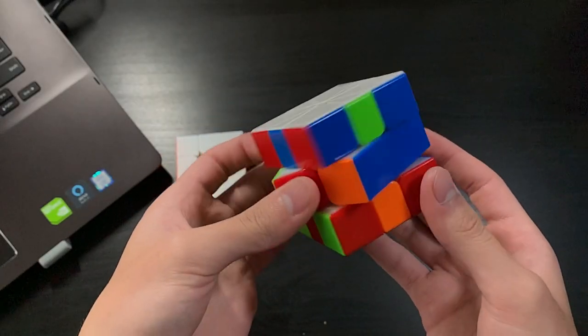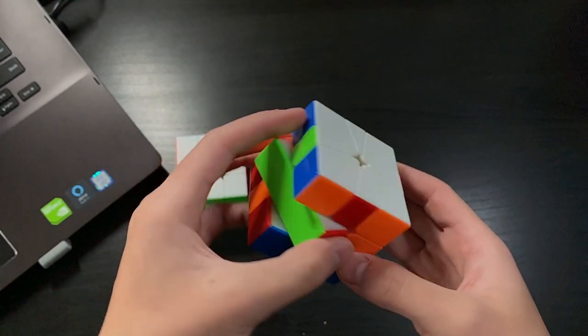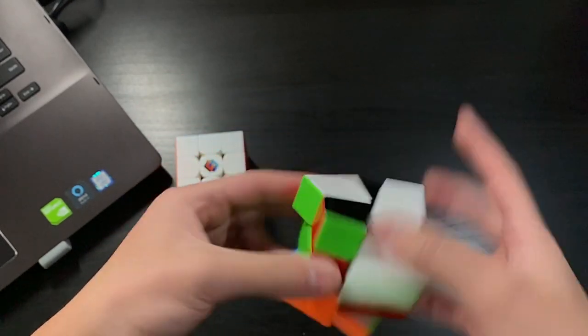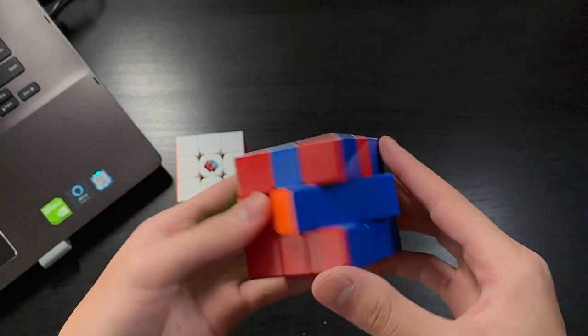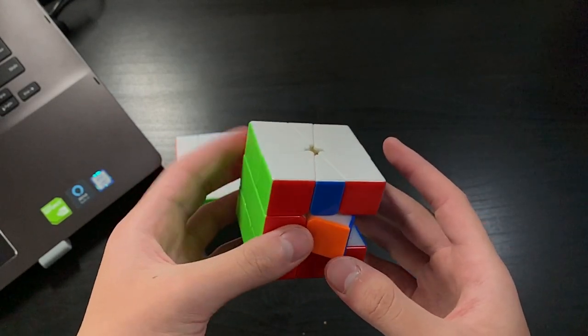But there are many more due to the addition of the bottom layer as well as certain parity cases. I won't be going too in depth on parity, but basically, there are cases that are impossible to get on a 3x3, but can be achieved on a puzzle like square one.